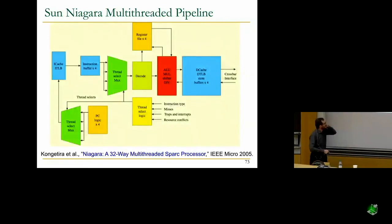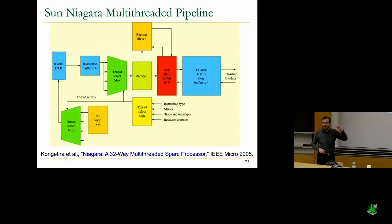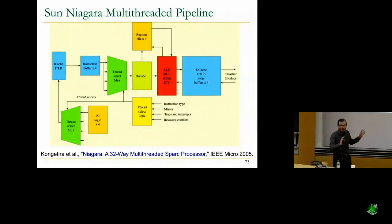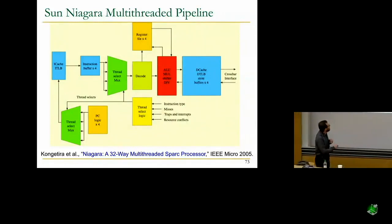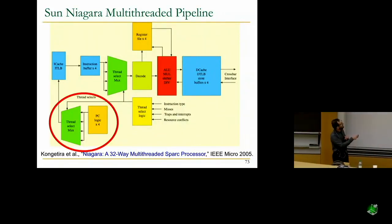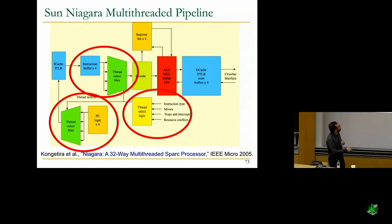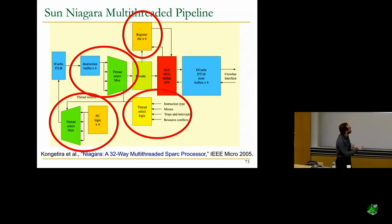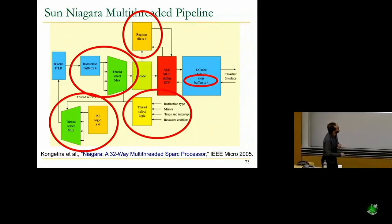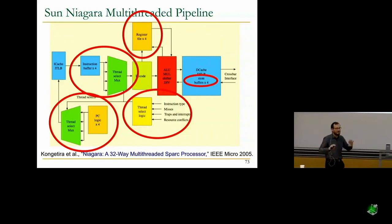Sun Niagara used similar principles and was one of the first multi-core machines. The idea was simple: keep the pipeline simple with no data-dependency check logic. It could fetch from four different threads, with a thread-select MUX and four different instruction buffers. The thread-select logic selects a thread based on various conditions. There's another thread-select MUX from the instruction buffers, a register file times four to distinguish between threads, and store buffers times four — so per-thread data structures are multiplied by four in the machine.